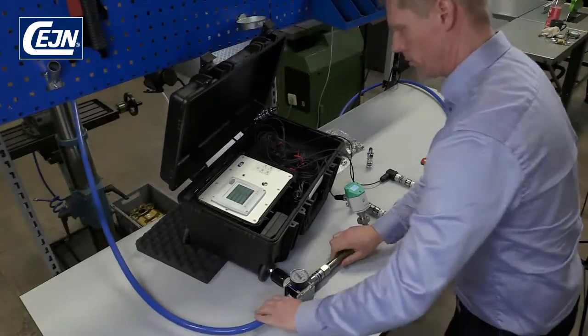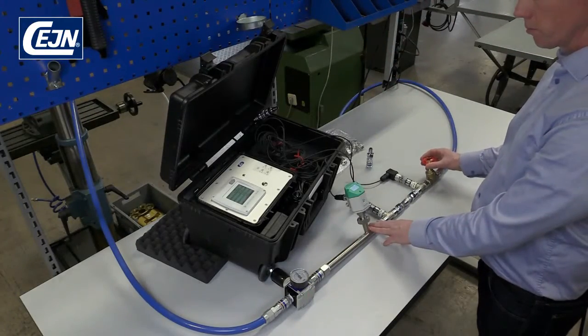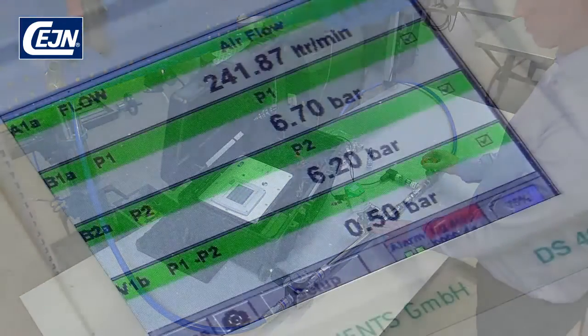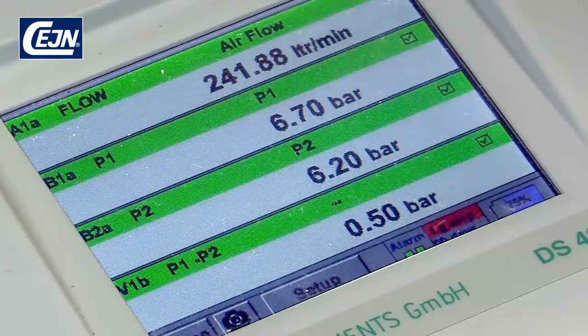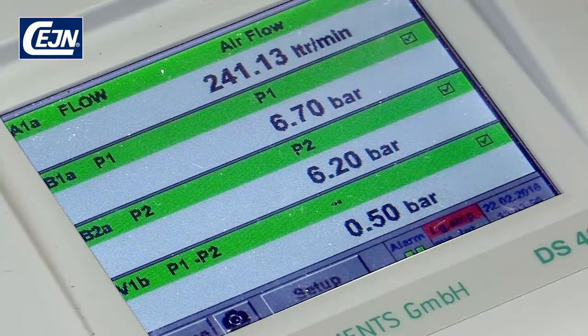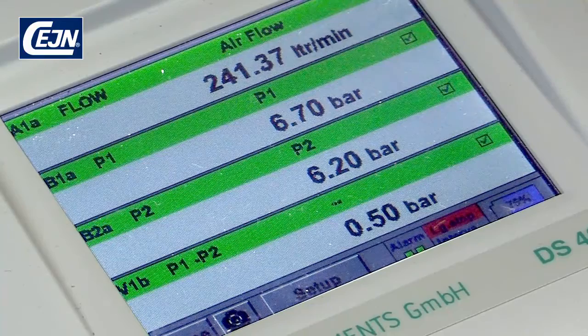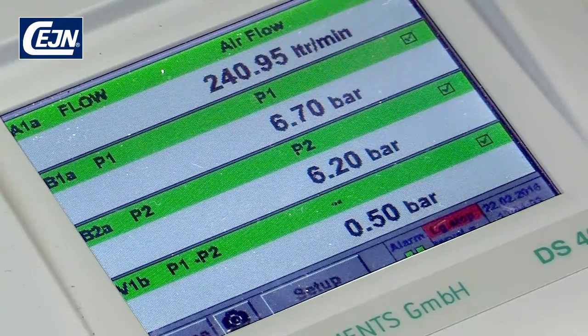Now we can start measuring the flow. If necessary, you can adjust the valve to achieve more or less the same value as before. In this case, it's impossible to make any adjustments as the coupling is inferior to the previous one. As you can see, the coupling is showing a reading of only 240 litres and the pressure drop is enormous.